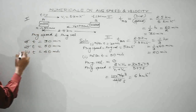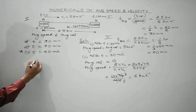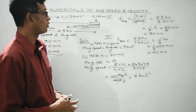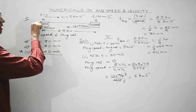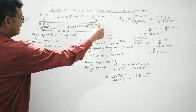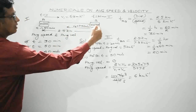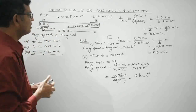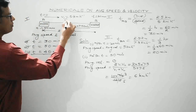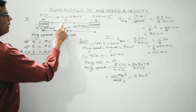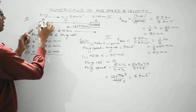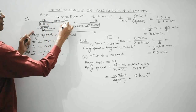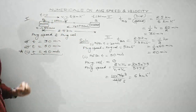Now for Part 3 — the interval t = 40 minutes. In the first 30 minutes the person reaches point B. In the next 10 minutes (out of the 20 minutes return trip), he travels halfway back. So at t = 40 minutes he is exactly at the midpoint between home and market.